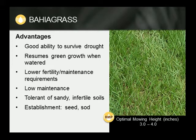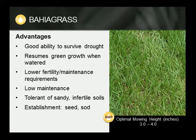Advantages of Bahia Grass. Bahia Grass can be described as having low maintenance inputs, with relatively low inputs of water, fertilizer, and pesticides required. It has a good ability to survive drought, thrive in sandy and fertile soils, and green up again when water becomes available. Bahia Grass establishes from seed or sod, and is also a good choice for non-irrigated grounds or large areas.